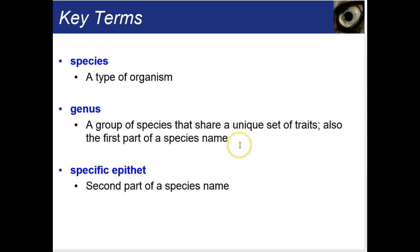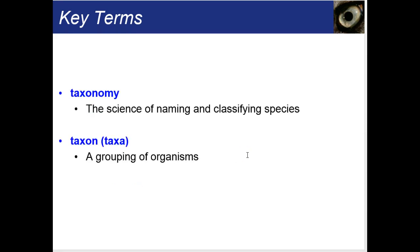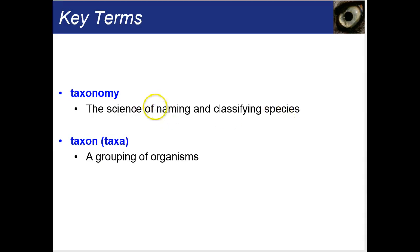A genus is a group of species that share a unique set of traits — also the first capitalized part of our species name. A specific epithet is the second part of the species name, usually with meaning grounded in Latin or Greek. Taxonomy is the science of naming and classifying species. As we saw at the beginning of our chapter, we actually do discover new species each year, so there are still species needing to be classified. Taxonomy does change as we learn more about life on Earth and change our classification schemes.